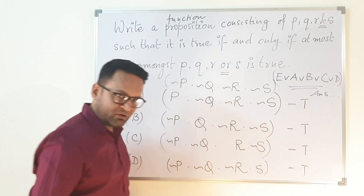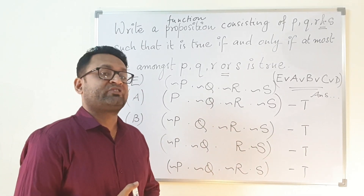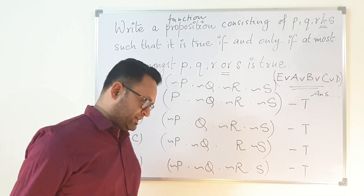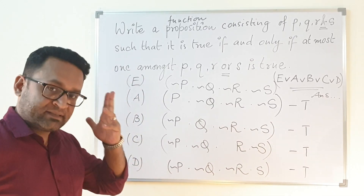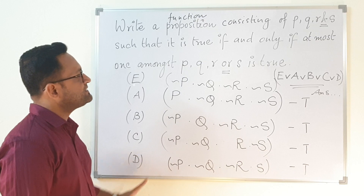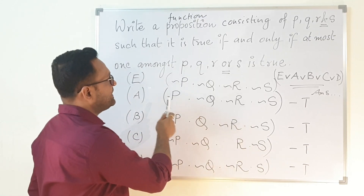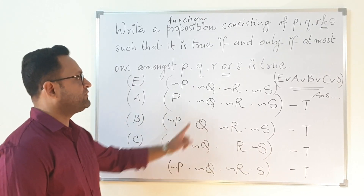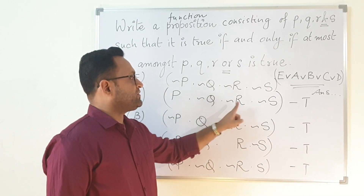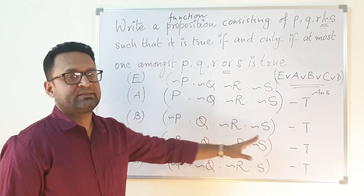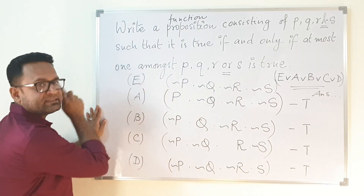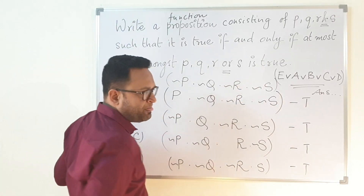Writing out the full answer: the proposition is (¬P ∧ ¬Q ∧ ¬R ∧ ¬S) ∨ (P ∧ ¬Q ∧ ¬R ∧ ¬S) ∨ (¬P ∧ Q ∧ ¬R ∧ ¬S) ∨ (¬P ∧ ¬Q ∧ R ∧ ¬S) ∨ (¬P ∧ ¬Q ∧ ¬R ∧ S). I have named them E, A, B, C and D respectively. This is going to be the answer.